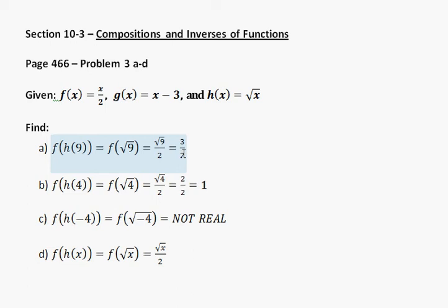For the next one, f of h of 4, put the 4 in the h function. So if I put 4 in up here, I get the square root of 4, so I put the square root of 4 into the f function: square root of 4 over 2. And that is equal to 2 over 2, which is equal to 1.